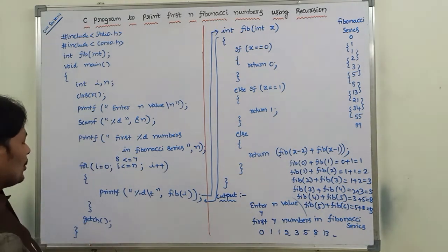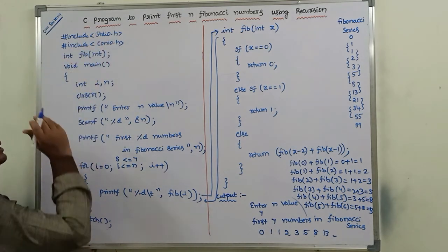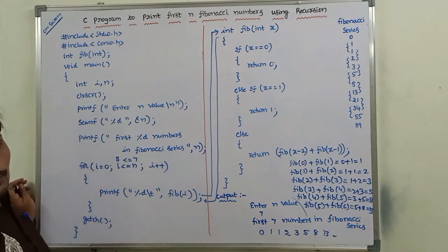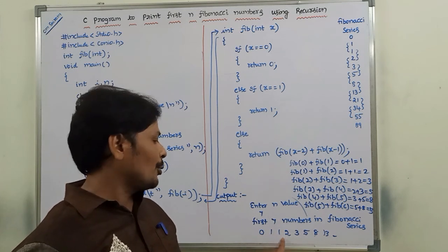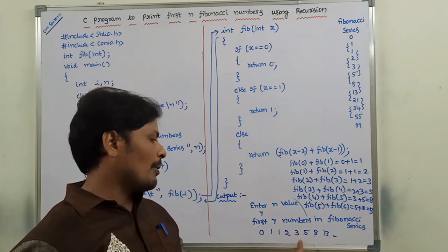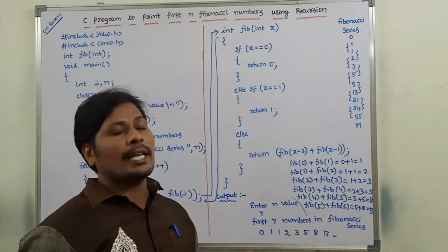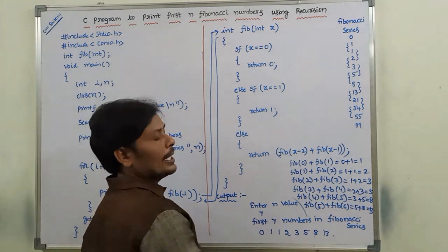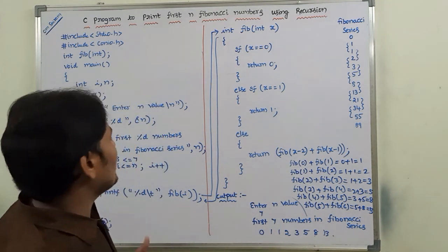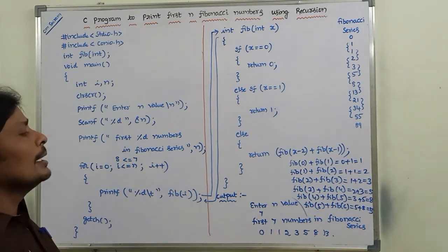So with n = 7: fib(0)=0, fib(1)=1, fib(2)=1, fib(3)=2, fib(4)=3, fib(5)=5, fib(6)=8, fib(7)=13. Since we entered n = 7, the first 7 numbers in the Fibonacci series are printed. This is the simple program to print the first n Fibonacci numbers using recursion.